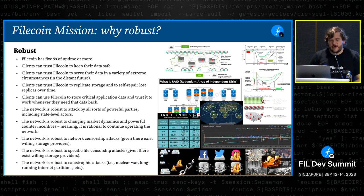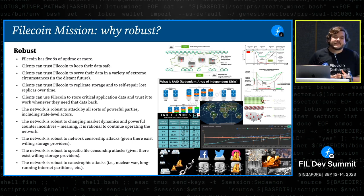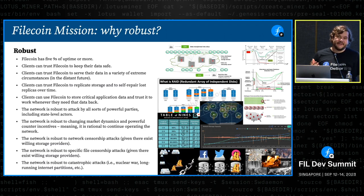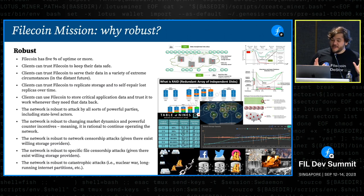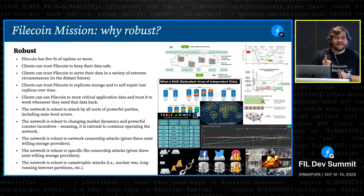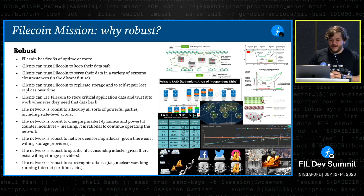So let's talk about robustness. What do we mean by robustness? First off, the network has to be available — very high availability, similar to the centralized cloud, like five nines of uptime, though maybe we should update that to nine nines. Good news here is that we've actually been perfectly available this entire time, which is really awesome — maybe four hours right after launch in 2020, but for the last two years we've been available.